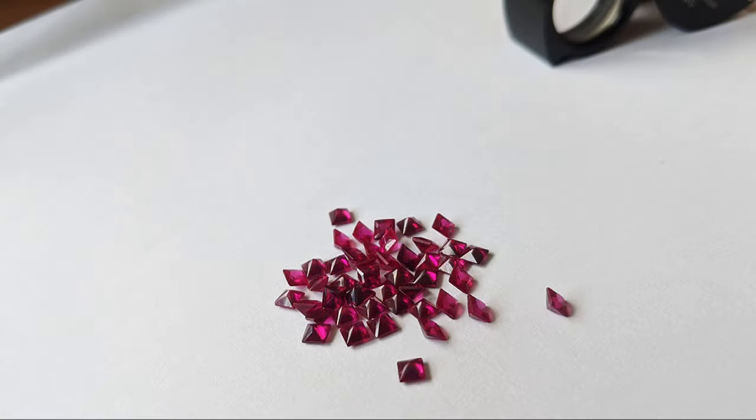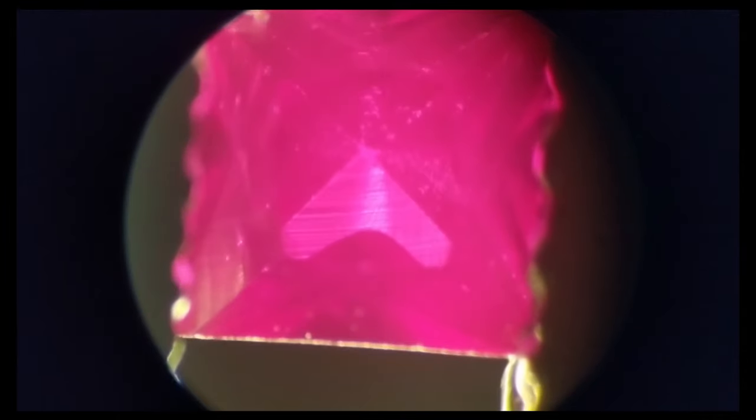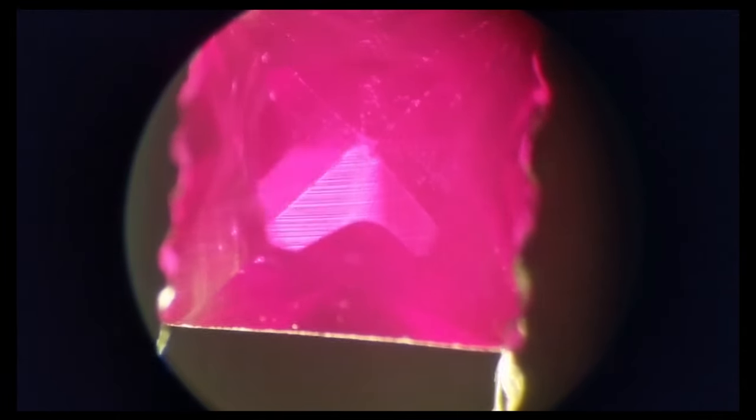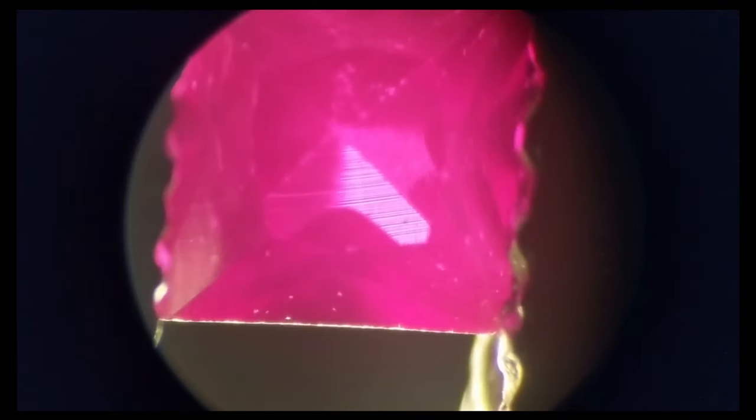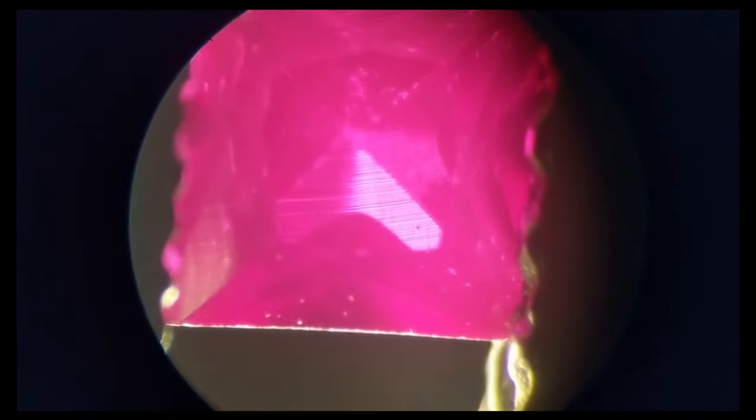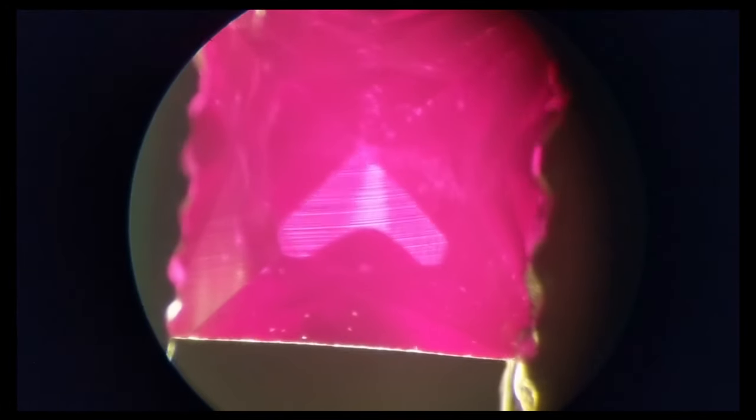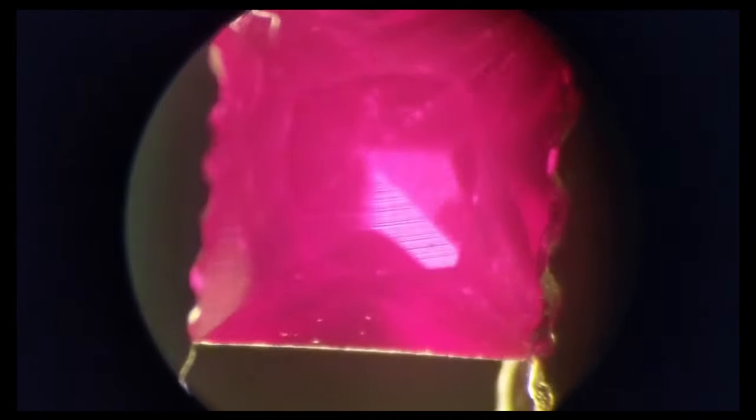Okay so the first microscope video I'm showing you right here is the princess cut synthetic ruby and the first thing you'll notice immediately is these curved lines on the bottom of the stone which I just zoomed in. These curved lines is a clear indicator of a synthetic ruby and they're called curved striae, and it's the most telltale sign for flame fusion ruby.